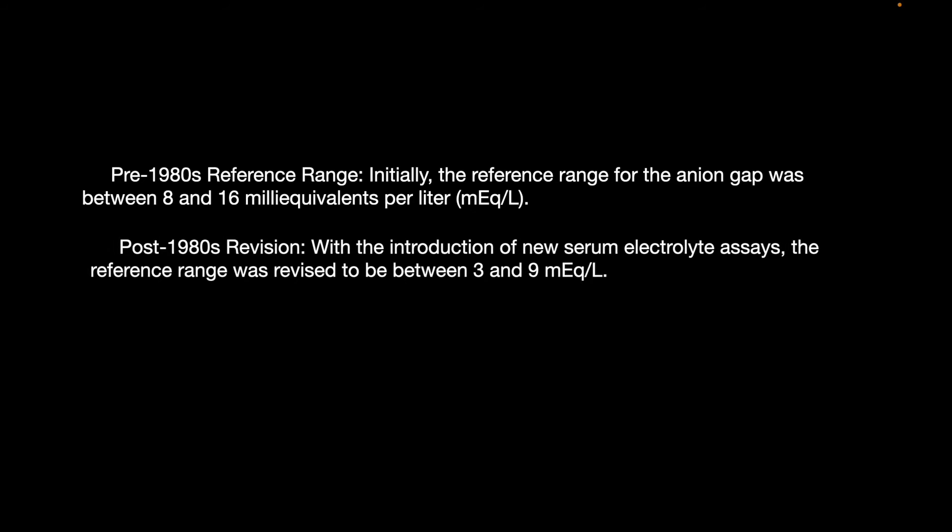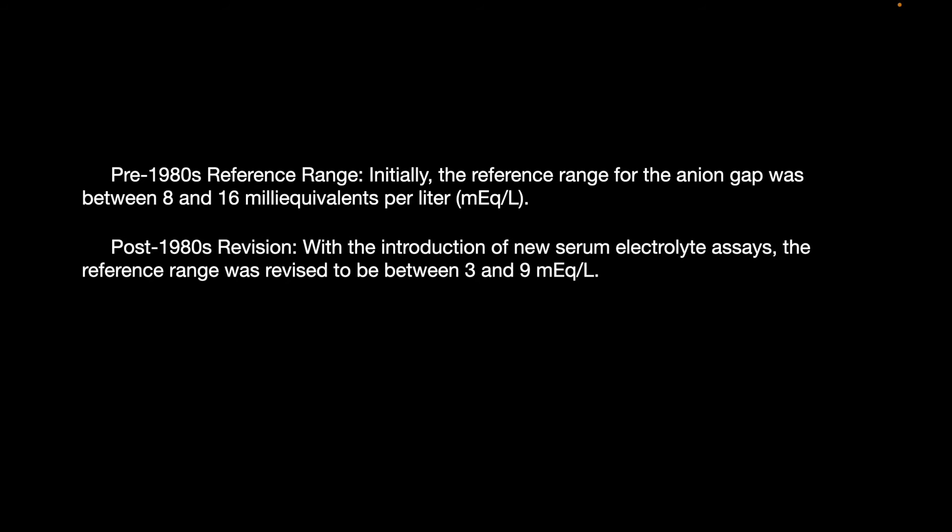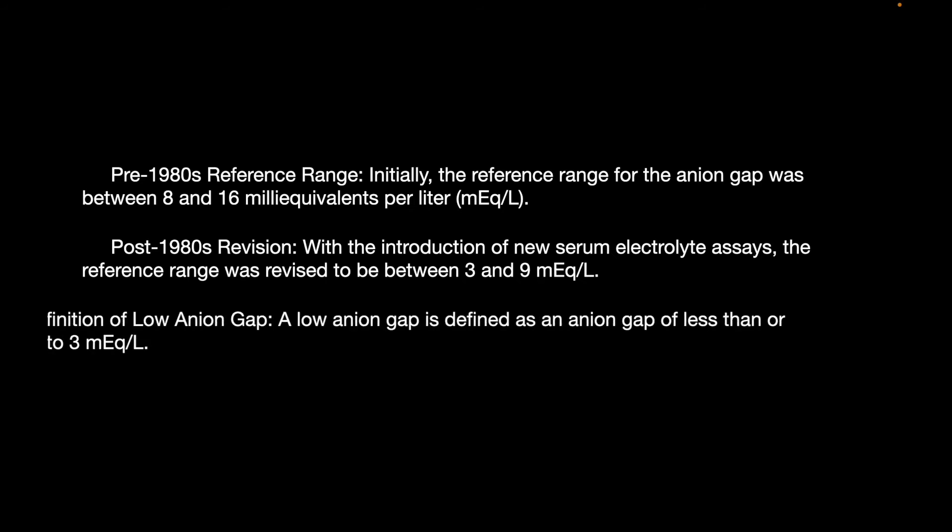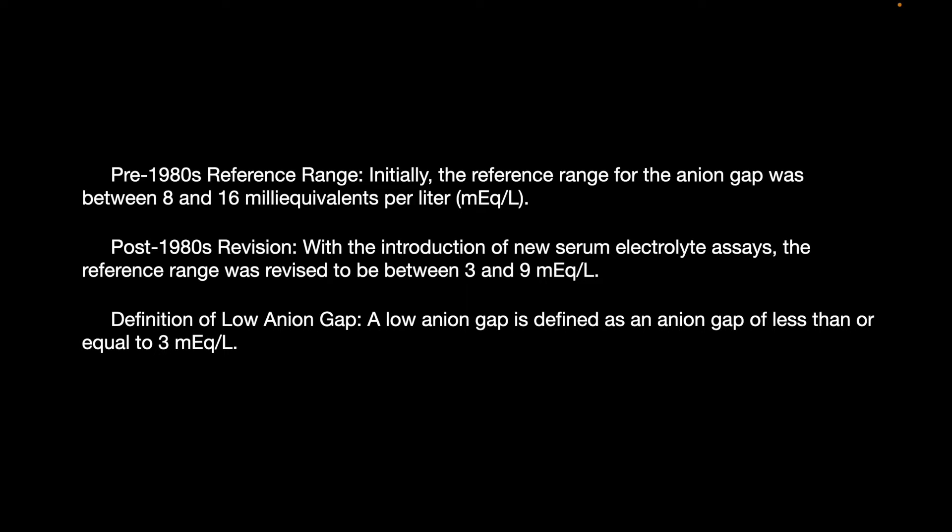Pre-1980, the reference range for anion gap was 8 to 18, which was considered normal. In the 1980s, a revision was done with the introduction of a new serum electrolyte assay, and the reference range was revised to 3 to 9. A low anion gap is defined as an anion gap less than 3.